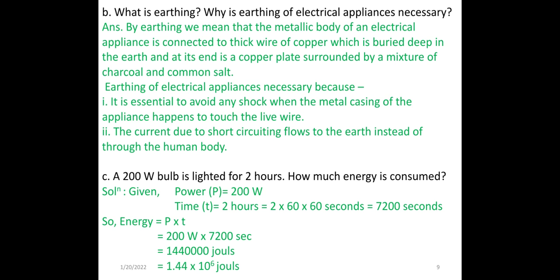What is earthing? Why is earthing of electrical appliances necessary? By earthing, we mean that the metallic body of an electrical appliance is connected to a thick copper wire buried deep in the earth, with a copper plate at its end surrounded by a mixture of charcoal and common salt. Earthing is necessary to avoid any electric shock when the metal casing of an appliance happens to touch the live wire. The current due to short-circuiting flows into the earth instead of through the human body.